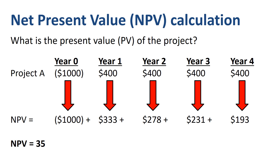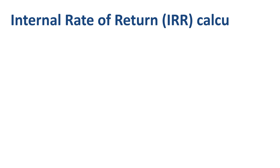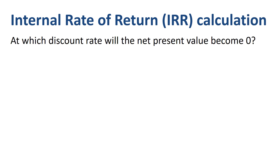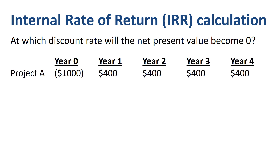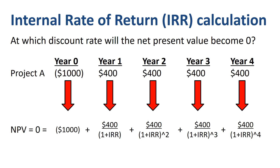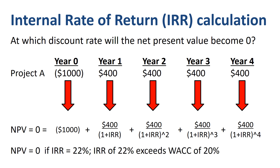As the net present value of this project is positive, it is worth pursuing, as it creates value for the company. To calculate the internal rate of return, IRR is the discount rate at which the net present value becomes zero — you solve for IRR by setting NPV at zero. Taking the same Project A and writing down the formulas, through either trial and error or the use of the IRR formula in Excel, we find that the IRR for Project A is 22%. This IRR of 22% exceeds the weighted average cost of capital of 20%, so the project is worth pursuing as it creates value for your company.